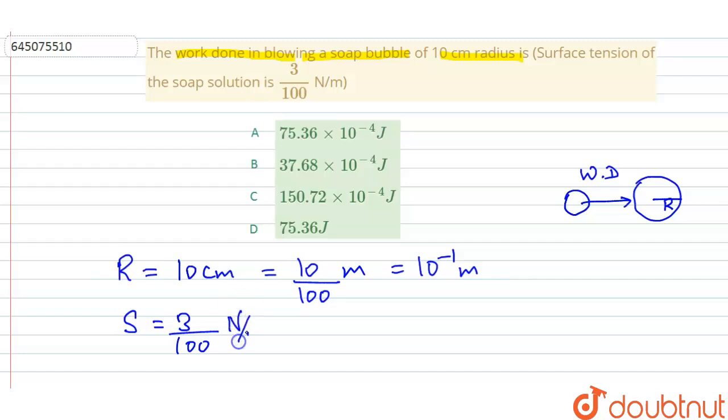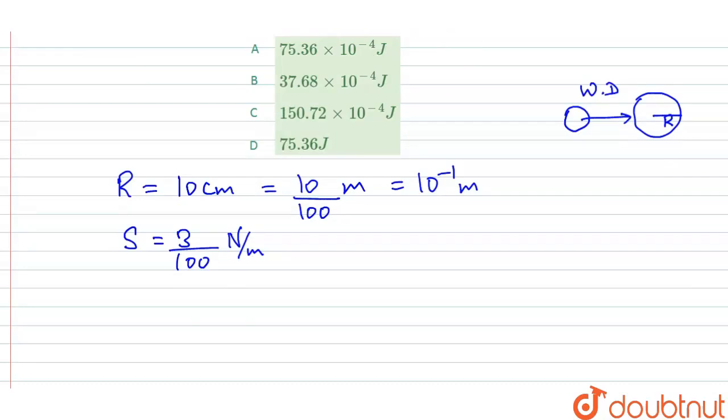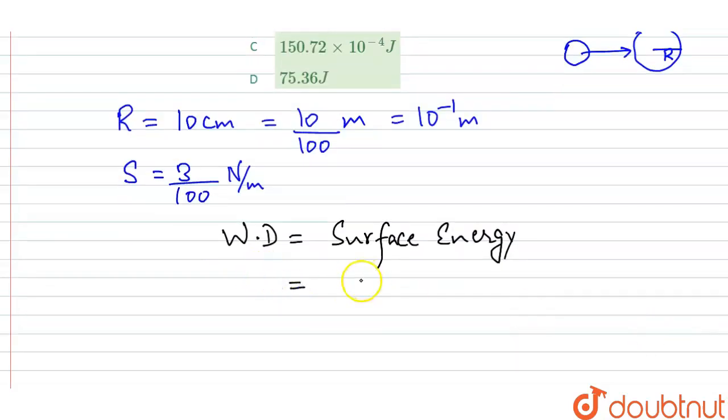So now students, what is the formula for this work done? The work done is equal to the surface energy, and this surface energy is equal to the surface tension times the increase in surface area.